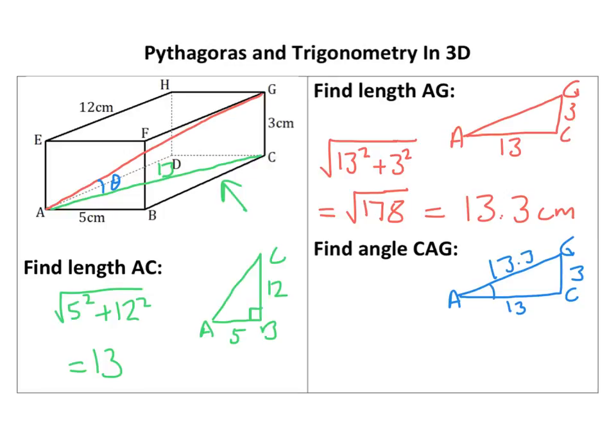So I'm finding this angle here, theta I'm going to call that. That would be tan, you can use any of them because you've got all three, but I want to use the ones that are going to give me the most accurate answer, opposite over adjacent.